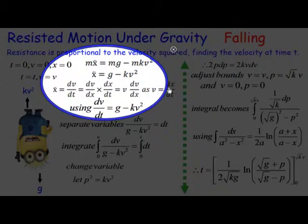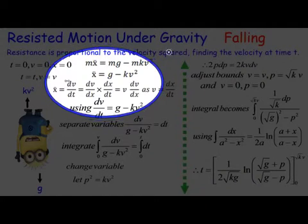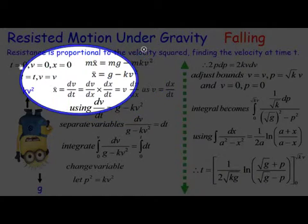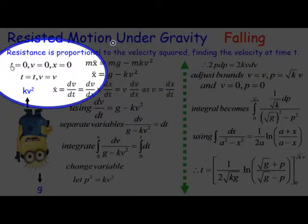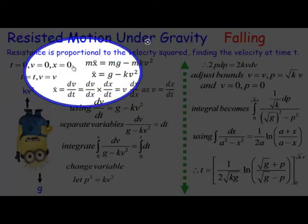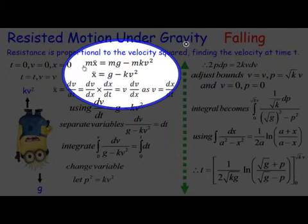Okay, so the first thing is what's happening. Well at t equals zero, the velocity is zero, and x is zero. So we're actually falling and downwards is positive. We set up the equations of motion.